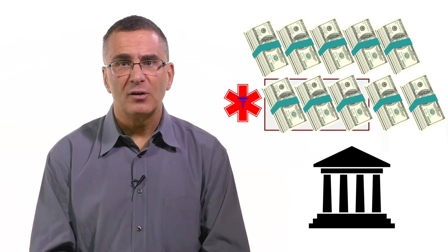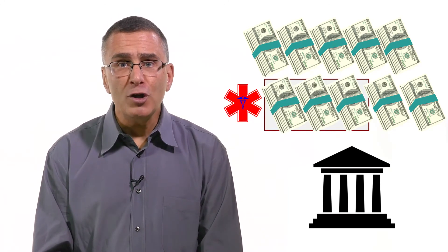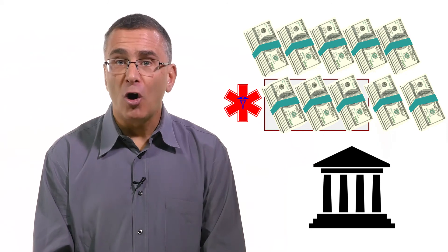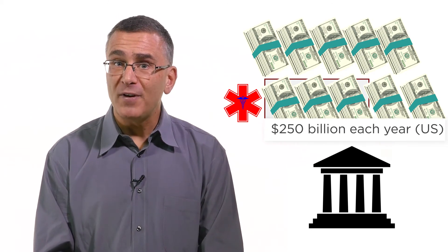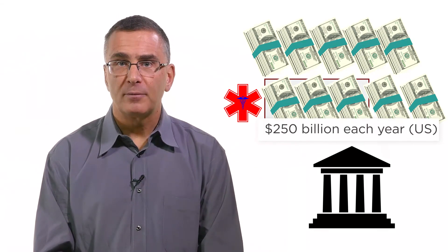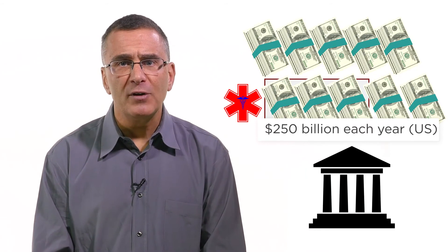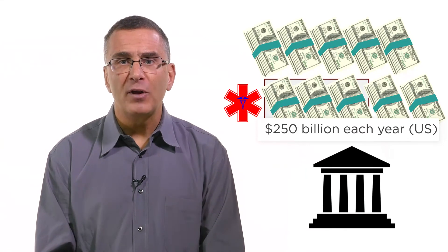If MIT gives me $10,000 for being a good economist, I have to pay tax on that, about $3,000 of tax. But if MIT spends $10,000 to give me health insurance, I'm not taxed. This exclusion of health insurance from taxation costs the US government $250 billion each year. This is basically a subsidy we're giving to folks to make sure that the healthy buy insurance.